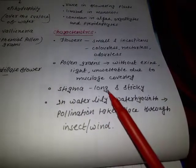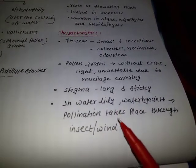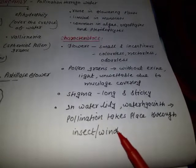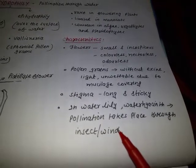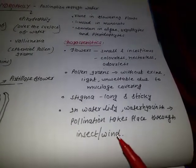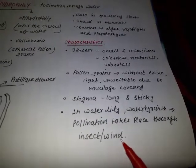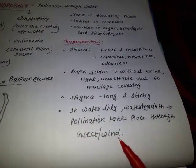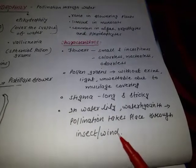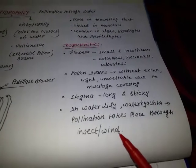Stigmas are long and sticky. Not all aquatic plants use water for pollination. For example, in water hyacinth and water lily, flowers emerge above the level of the water and are pollinated by insects or wind.